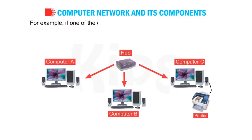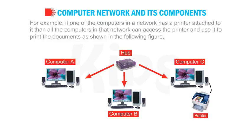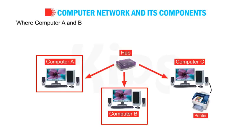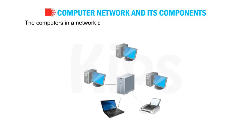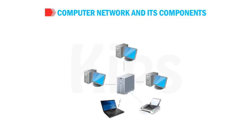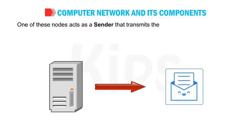For example, if one of the computers in the network has a printer attached to it, then all the computers in that network can access the printer and use it to print documents. Computer A and B in a network can give the print command to the printer attached with computer C. The computers in the network can communicate with each other as well as work independently. Each computer in a network is called a node. One of these nodes acts as a sender that transmits information to other nodes, known as receivers.